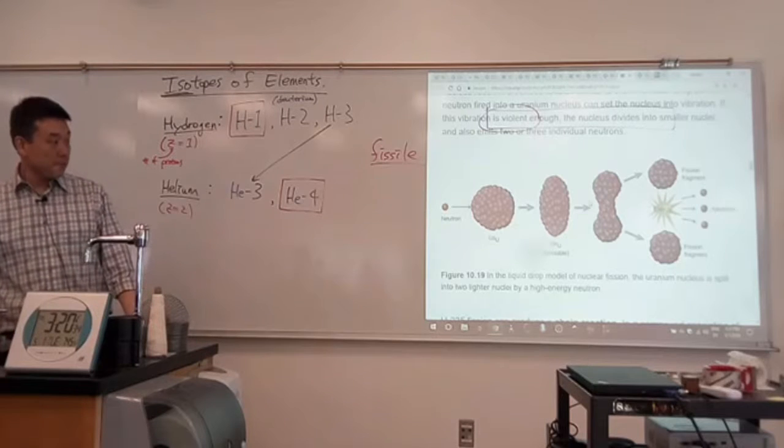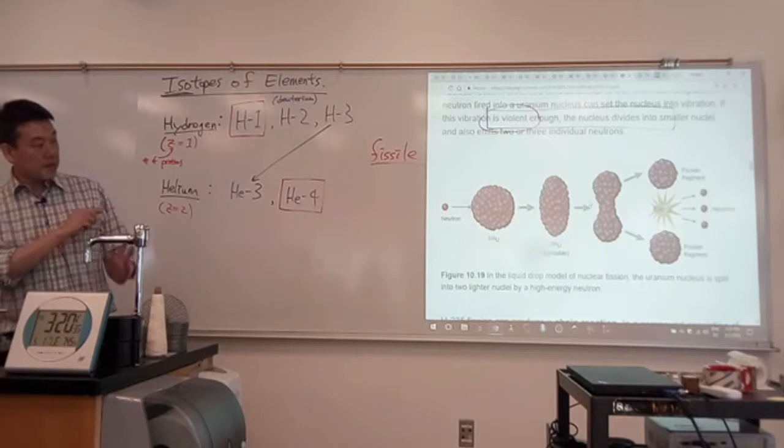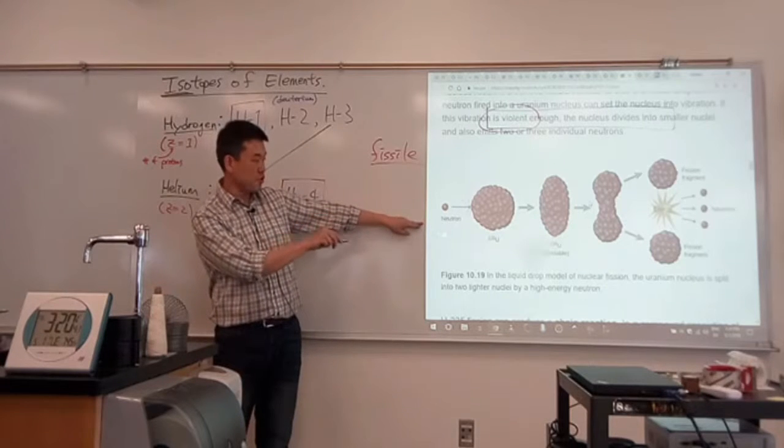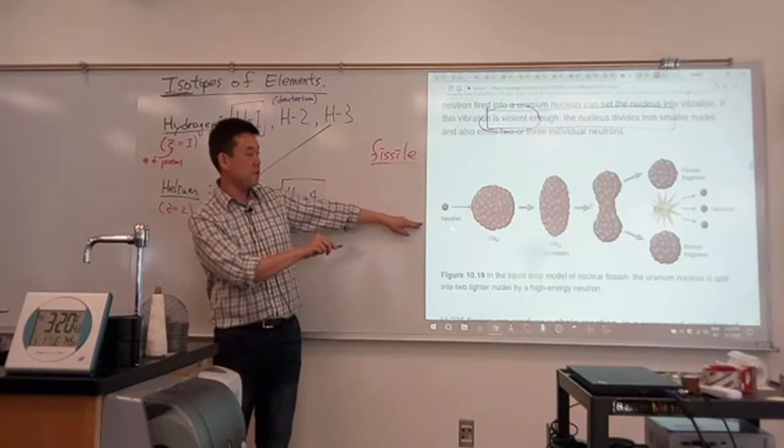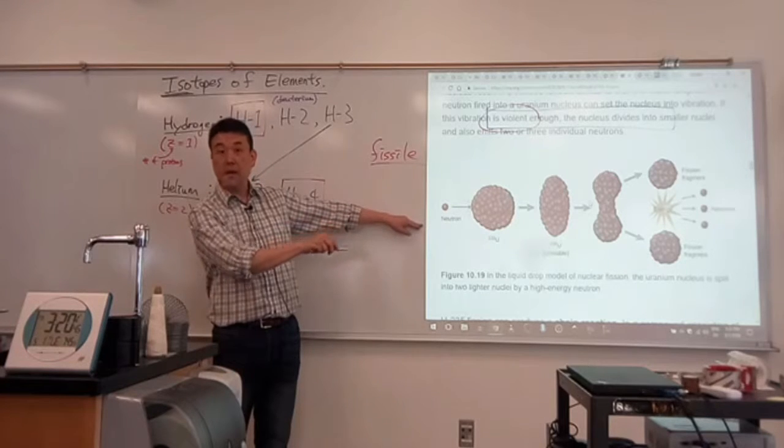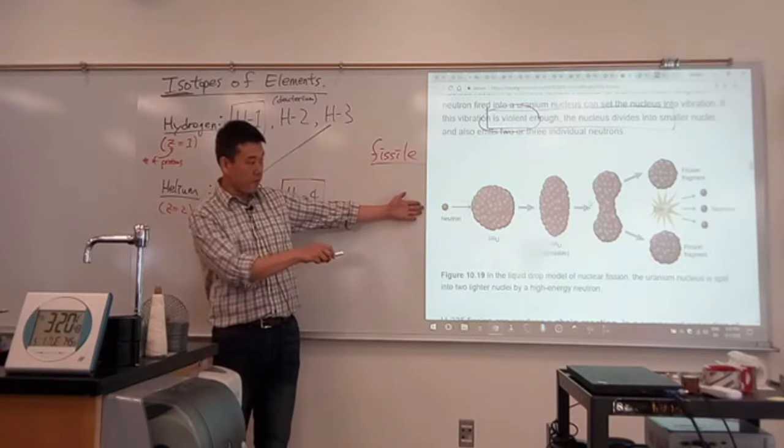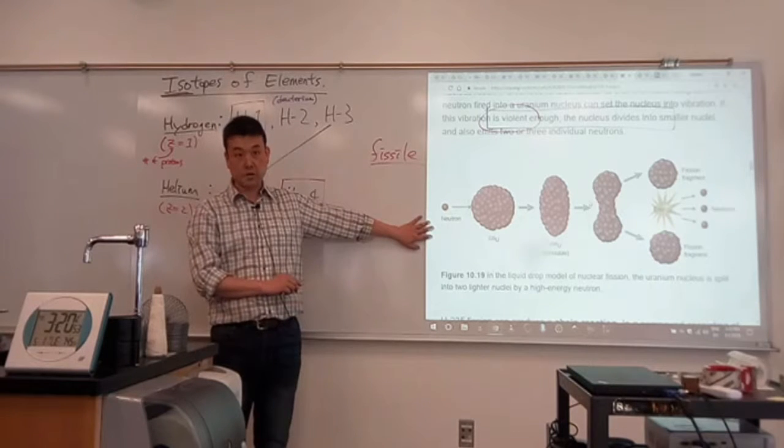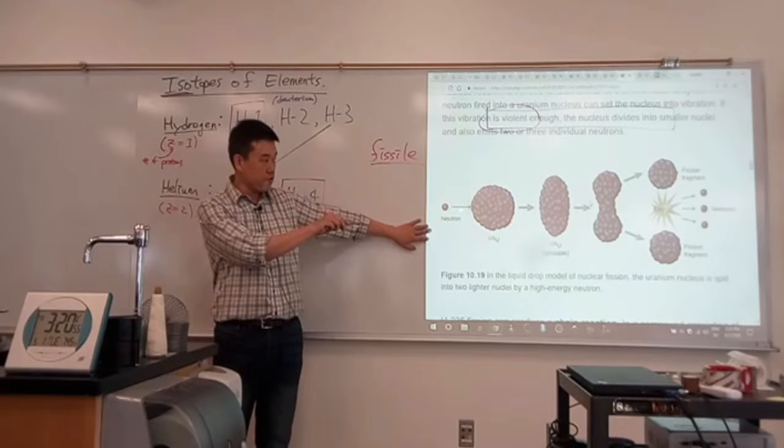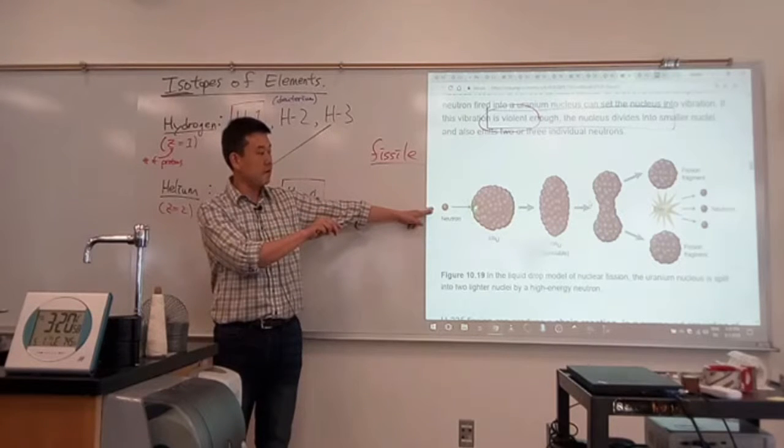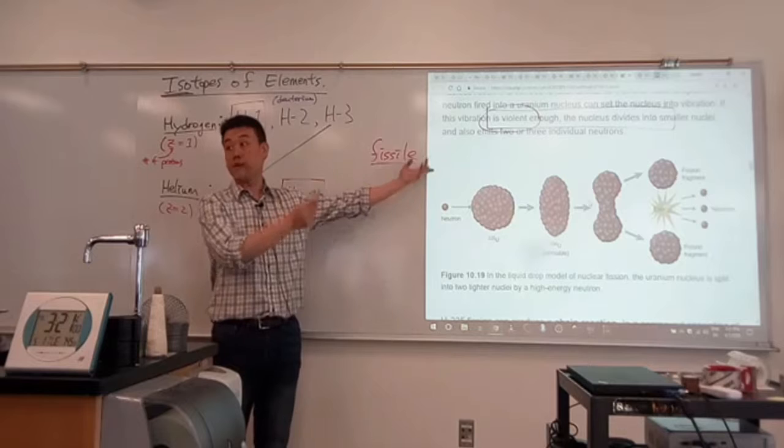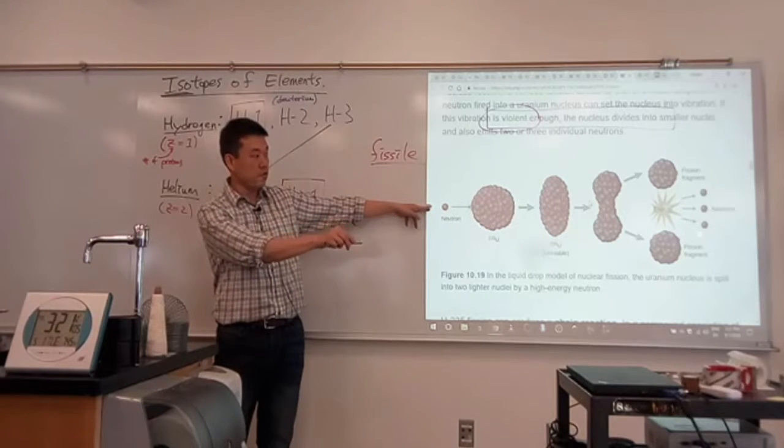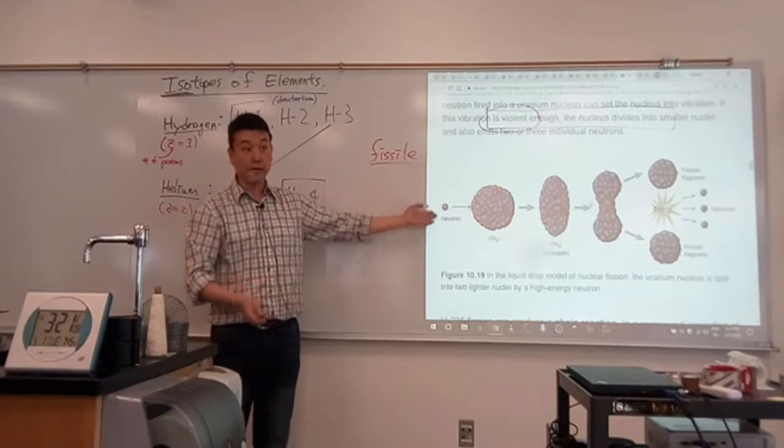So this is the key component of a fission process, that you need to have an initial neutron that's going to start the sequence of events. And the thing is, this one reaction, it doesn't release that much energy. So what you need is a chain reaction.